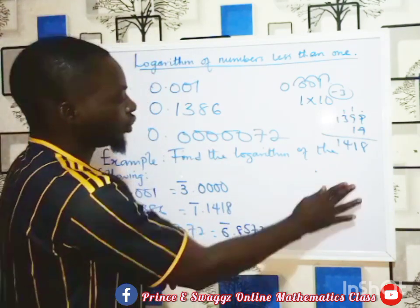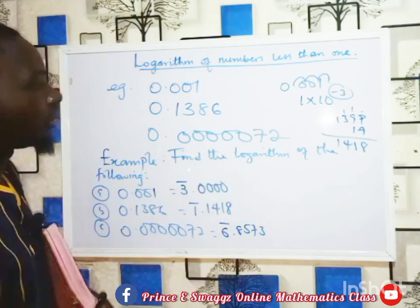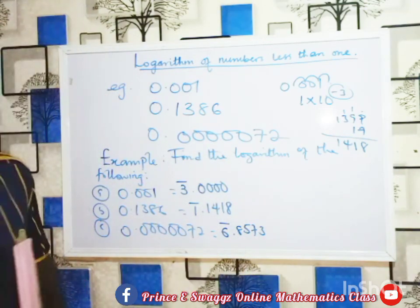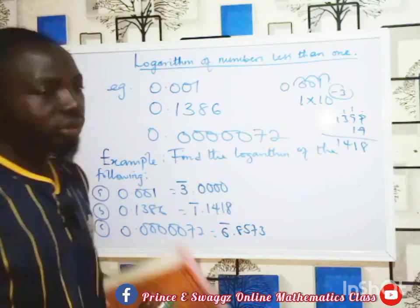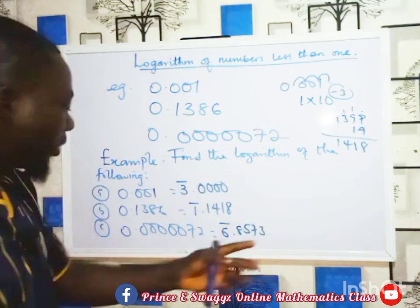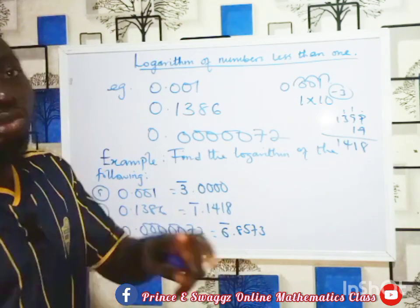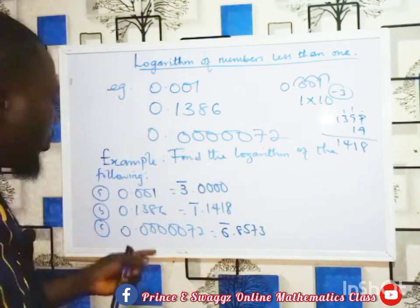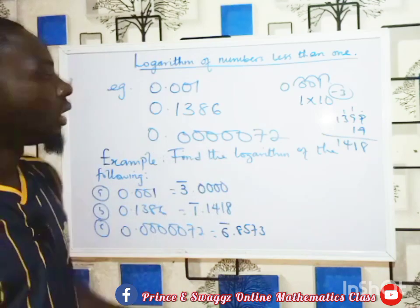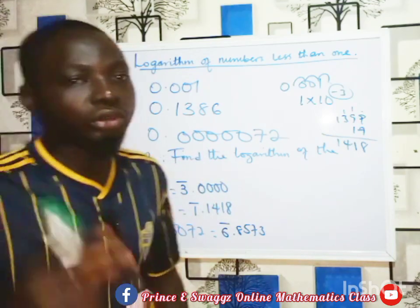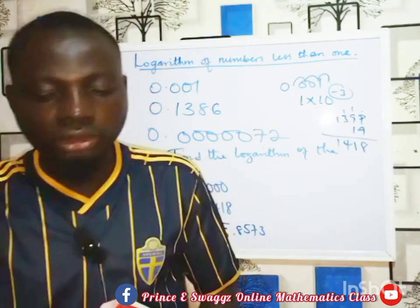Please take note: to find the logarithm of numbers less than one, first get the integer by counting the number of zeros before the real number. Then to get the mantissa, use your four-figure logarithm table, starting with two digits first. If you enjoyed the video, don't forget to share it with your friends, keep subscribing, following, commenting, and sharing for more exciting videos. Bye-bye, see you next class.